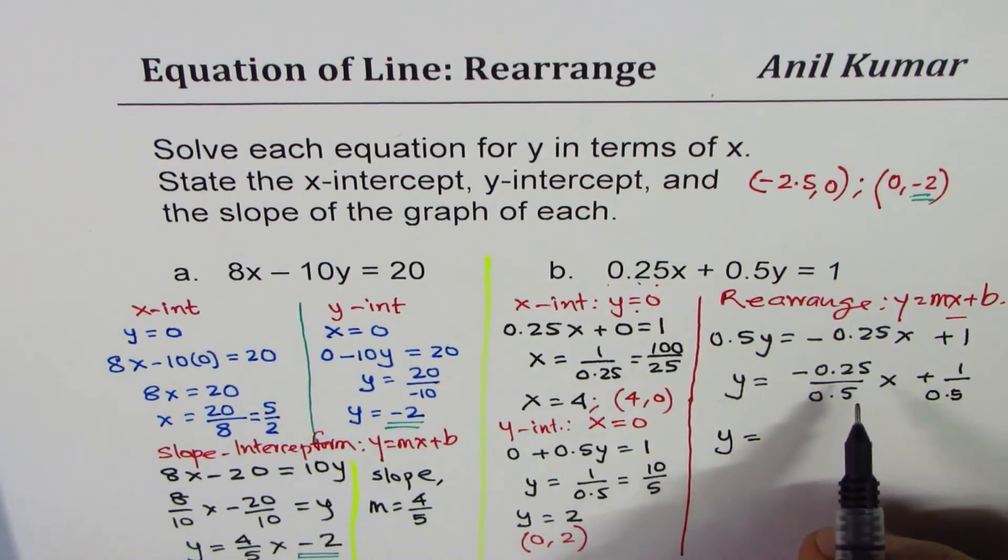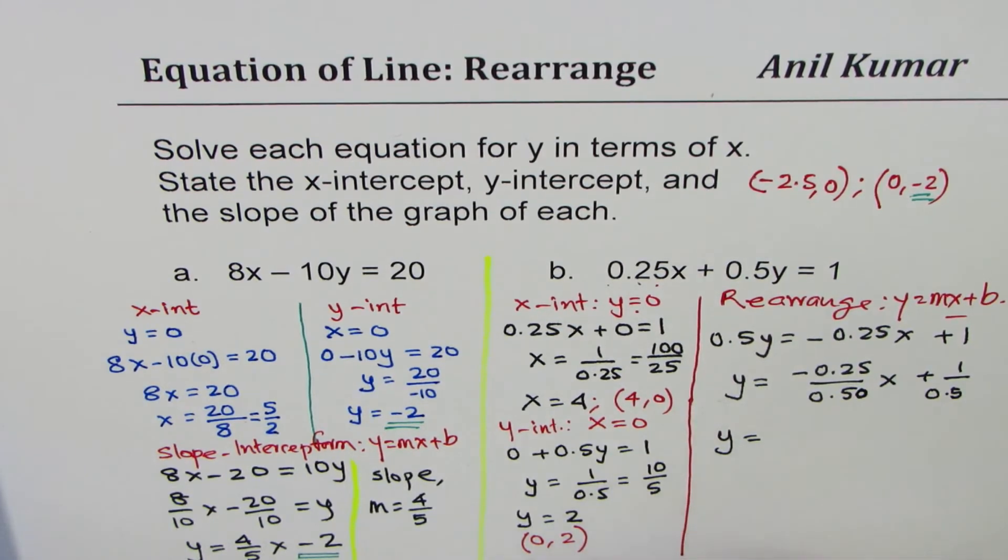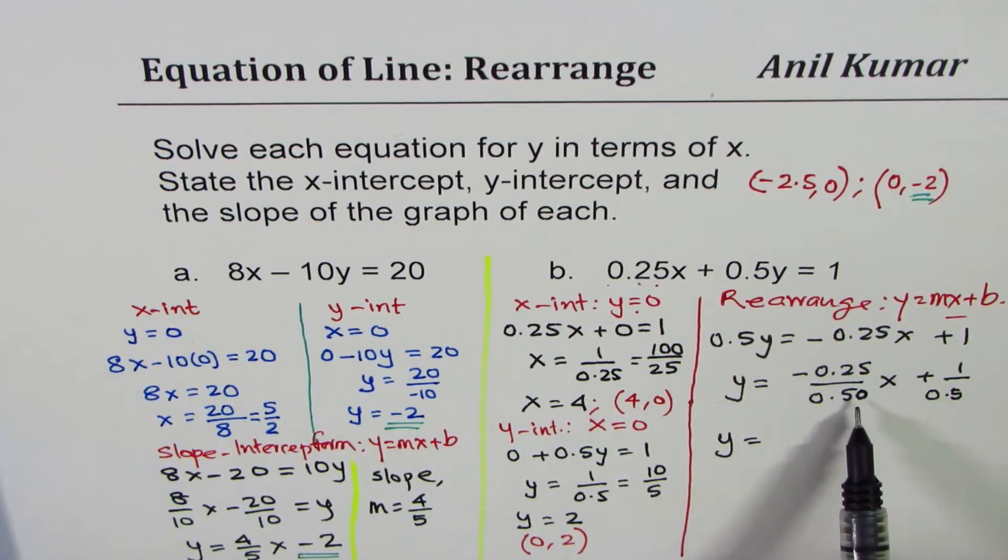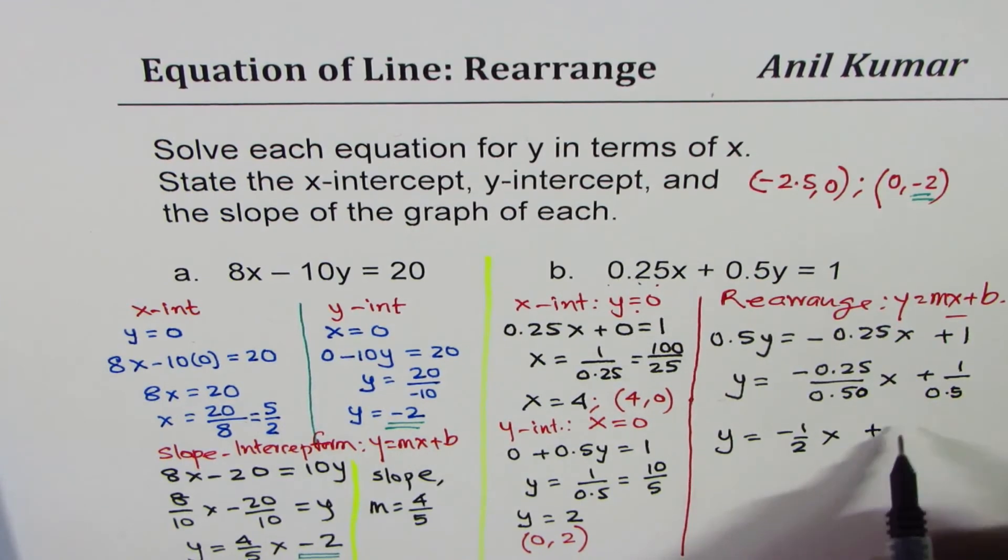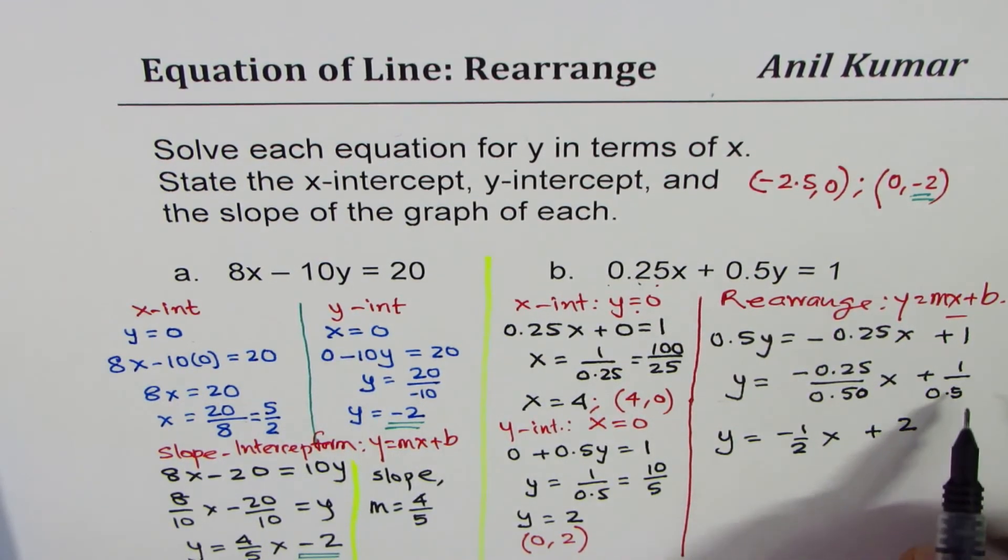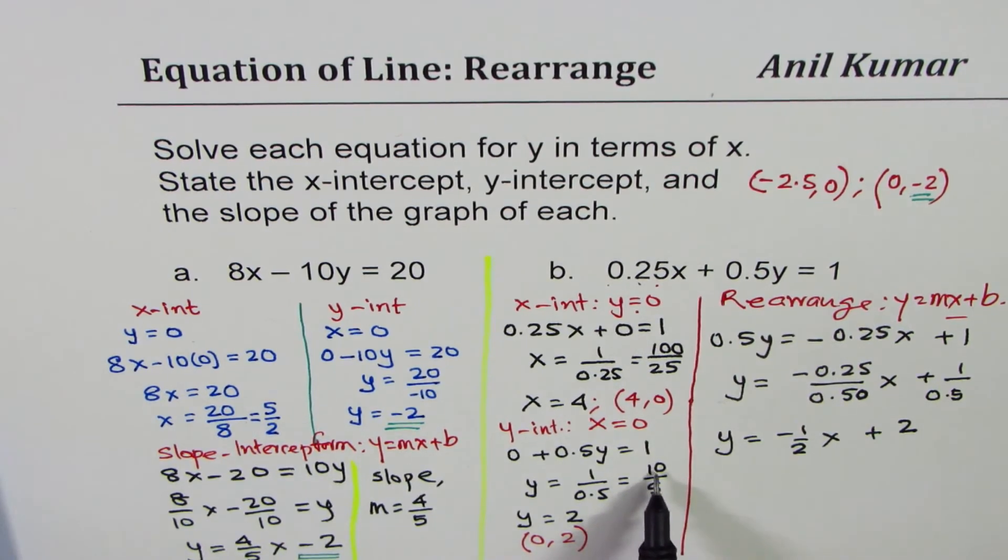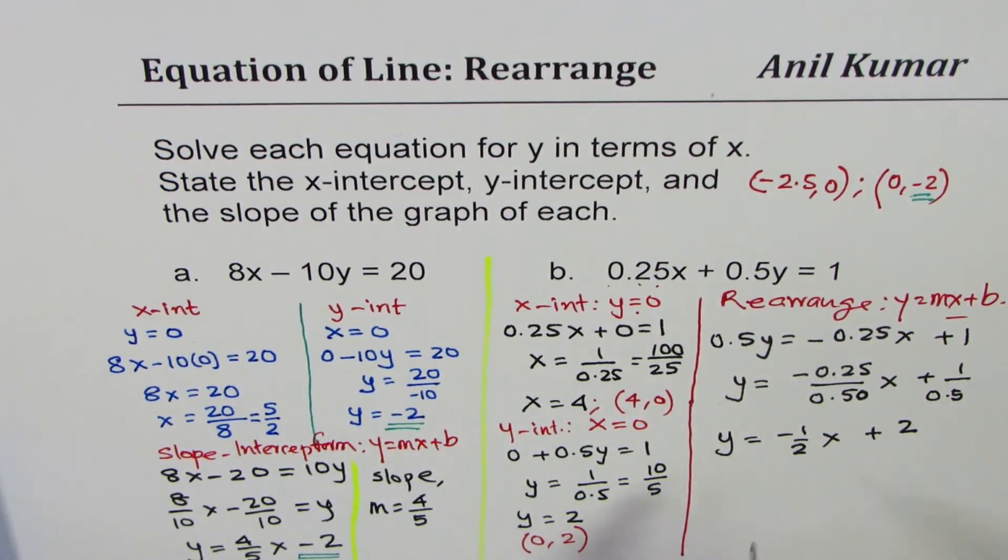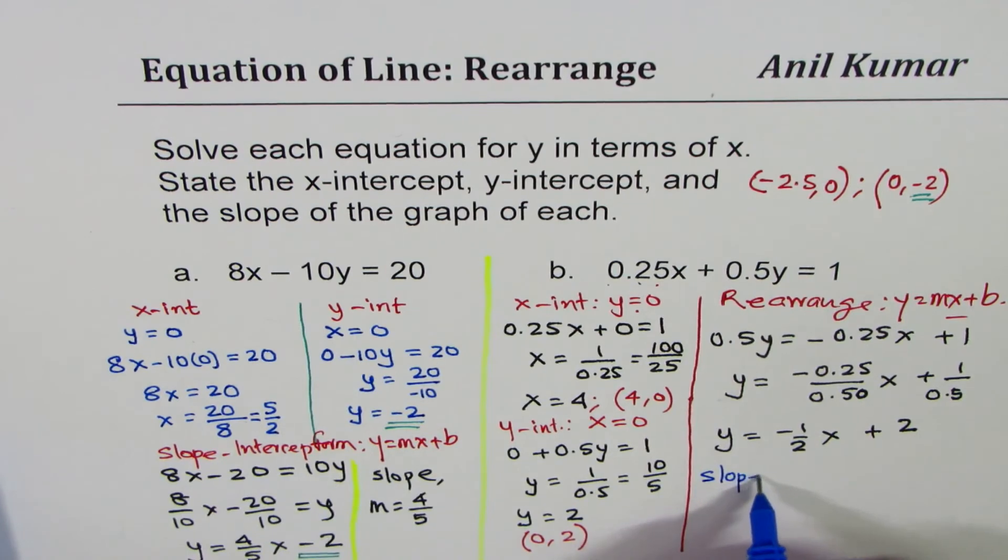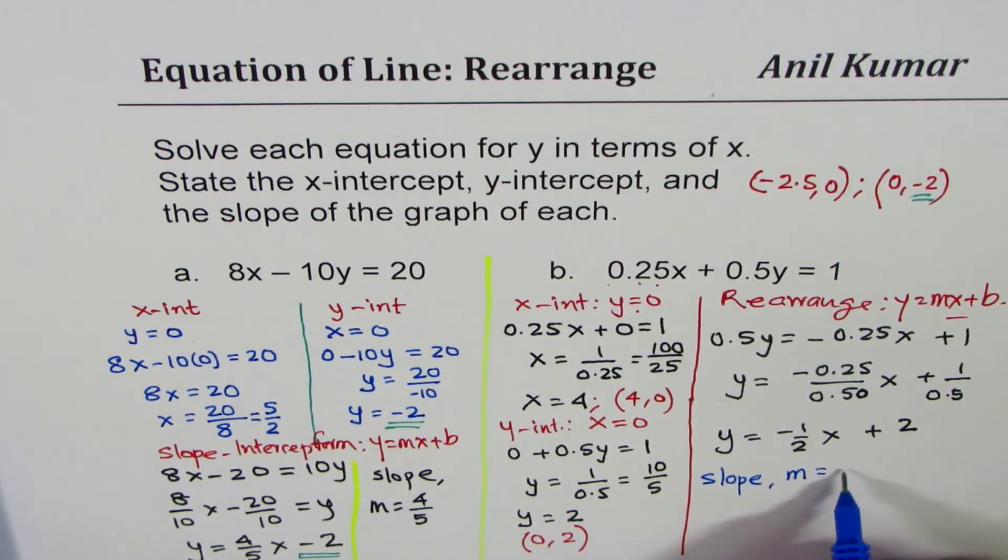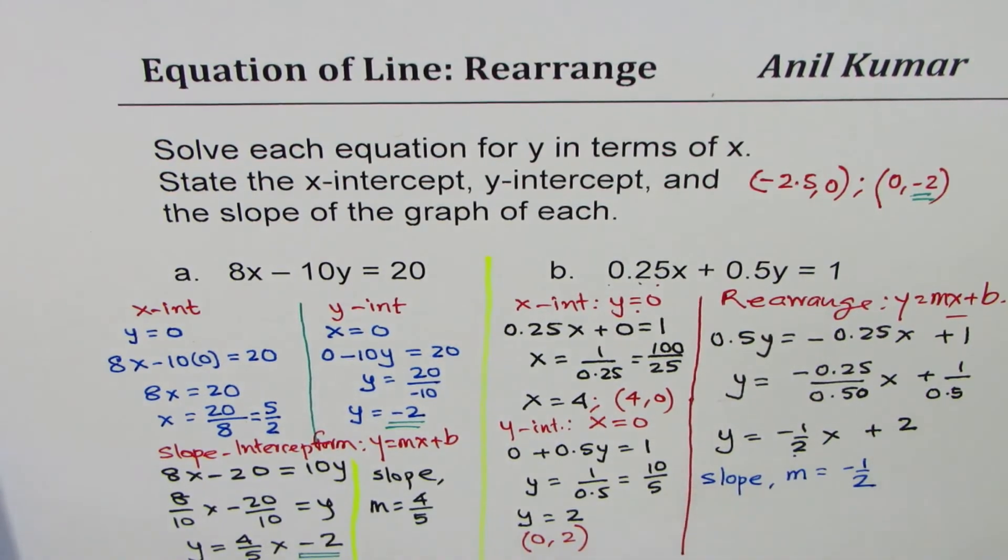So we get y equals, you can use calculator also. 25 divided by 50 is kind of half. So we can write this as minus half x. And 0.5 is half, so it is plus 2. So once you get used to decimals, it will be very easy. Here we did 1 divided by 0.5 is 10 divided by 5, which is 2. So that is what we have. And this helps you to check your results also. So from here, we can write down what slope is. So we get slope, which is m equals minus half. So that is the slope for us.